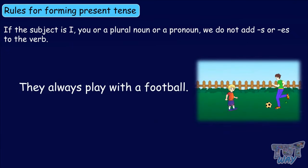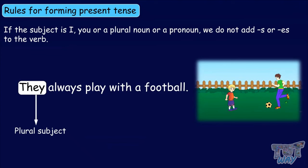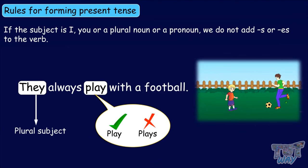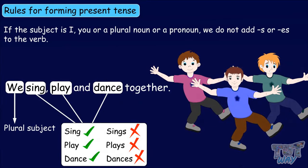'They always play with a football.' Here, the subject is 'they,' which is a plural pronoun, so we have used 'play' and not 'plays.' Remember, with 'I,' 'you,' and all plural nouns and pronouns, we do not add 's' or 'es' to the verb. 'We sing, play, and dance together.' Since 'we' is a plural pronoun, we have used 'sing,' 'play,' and 'dance' and not 'sings,' 'plays,' and 'dances.'